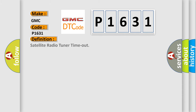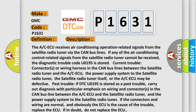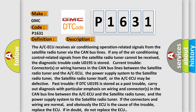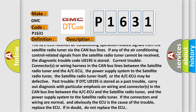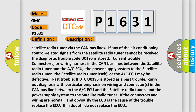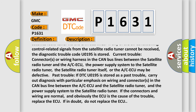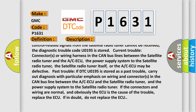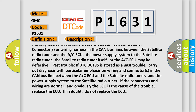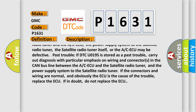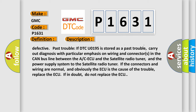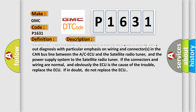The basic definition is: Satellite Radio Tuner Timeout. The ACAQ receives air conditioning operation related signals from the satellite radio tuner via the CAN bus lines. If any of the air conditioning control related signals from the satellite radio tuner cannot be received, the diagnostic trouble code U0195 is stored. Current trouble may be connectors or wiring harness in the CAN bus lines between the satellite radio tuner and the ACAQ, the power supply system to the satellite radio tuner, the satellite radio tuner itself, or the ACAQ may be defective.